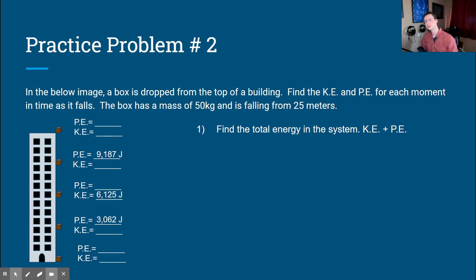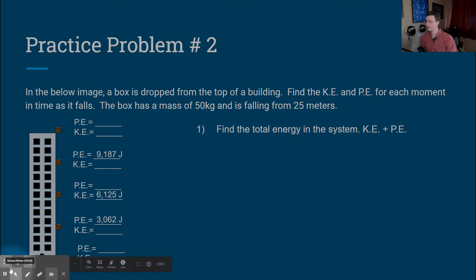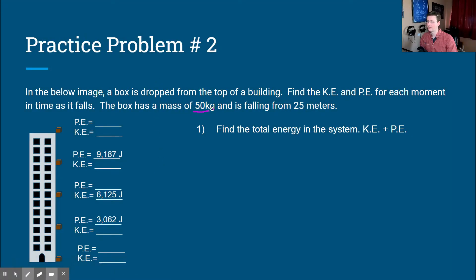Now we move on to practice problem number two. We get a little less information here, so we need to both know how potential and kinetic energy interact and know how to use those equations. In the image, a box is dropped from the top of a building. We need to find the kinetic energy and potential energy for each moment in time as it falls. The box has a mass of 50 kilograms and is falling from 25 meters.